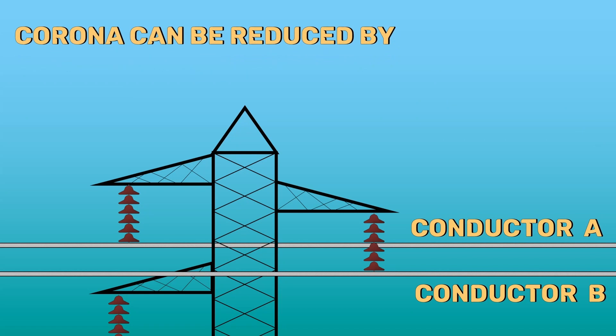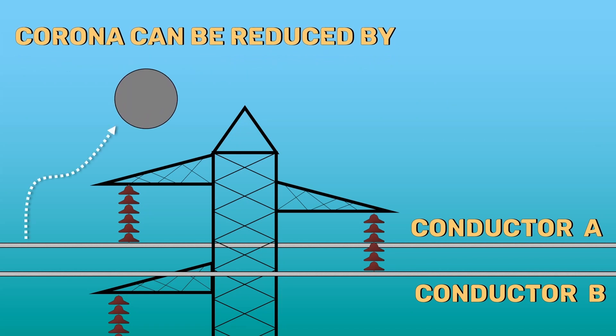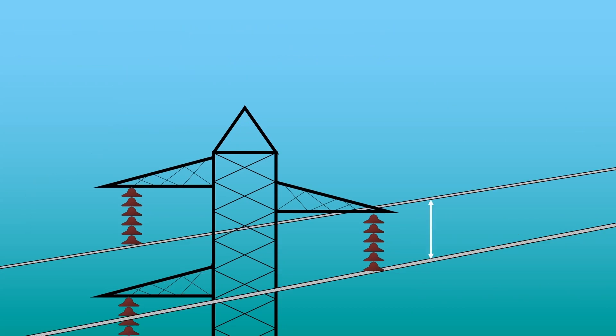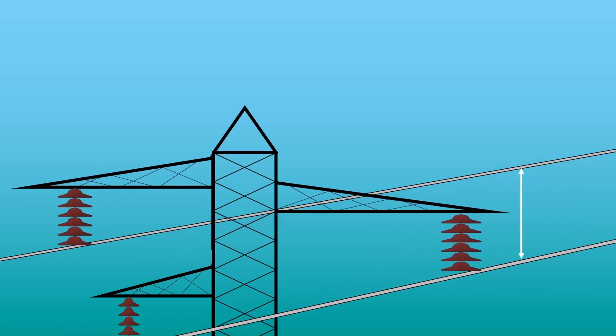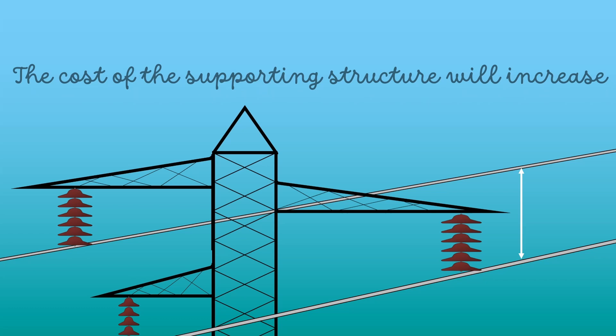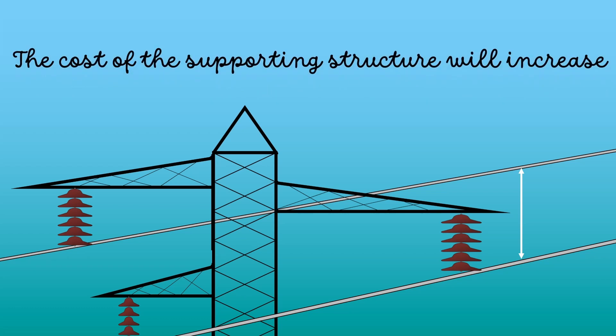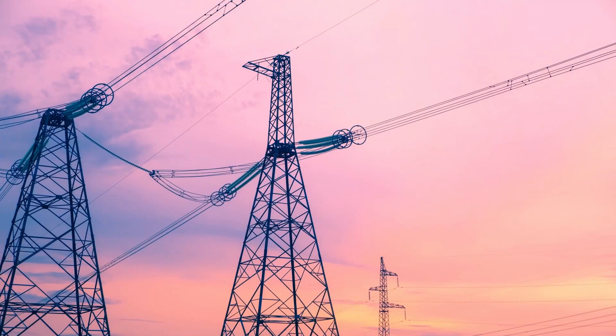The corona can be reduced by increasing the conductor's size and the conductor's spacing. However, the spacing cannot be increased too much otherwise the cost of the supporting structure will increase.